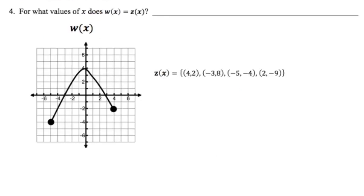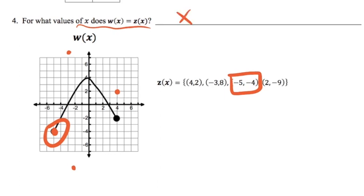Like I did the last time I had a graph, for this number four answering the same question as we did in three, I'm going to go and plot these points over here onto the graph. When I do this, I see that this point right here, (-5, -4), is shared on both the graph and the list of ordered pairs. So the x value of -5 would produce the same output in both w(x) and z(x).